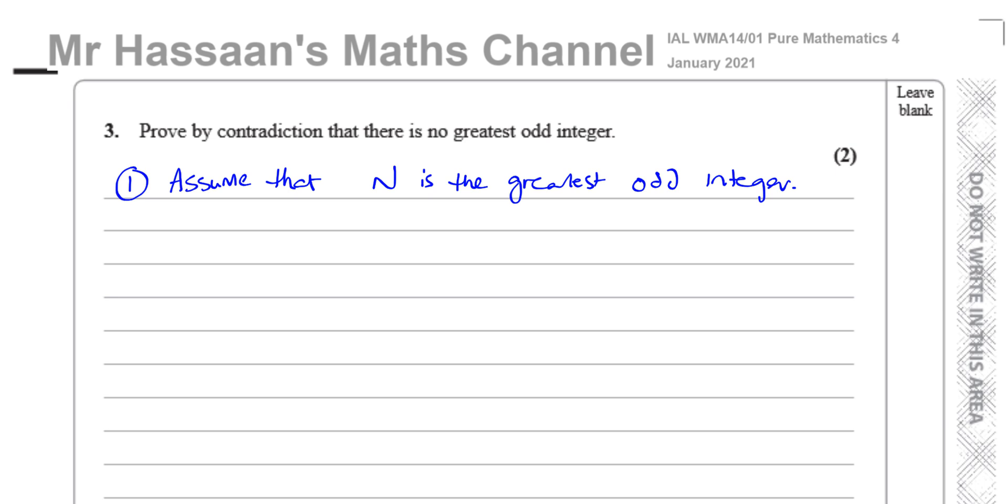Now we've got to show that this leads to a contradiction, which is a pretty simple one, because I know that, you can say, however, n plus 2 is odd if n is odd, right? Because the odd numbers are separated by 2, basically. So n plus 2 will also be odd. And we can say that n plus 2 is greater than n.